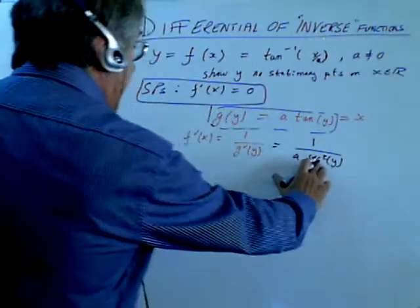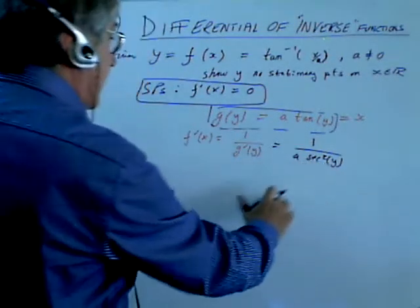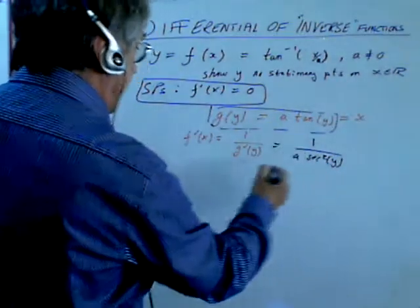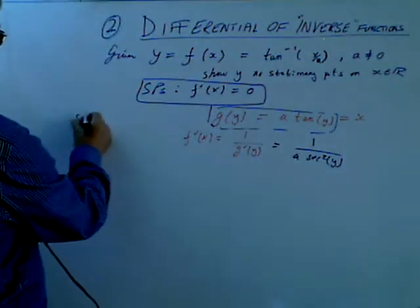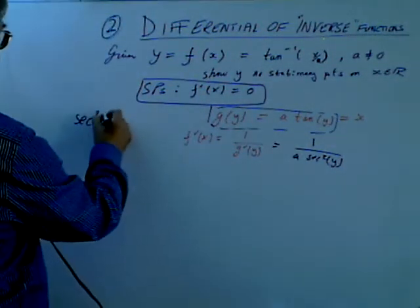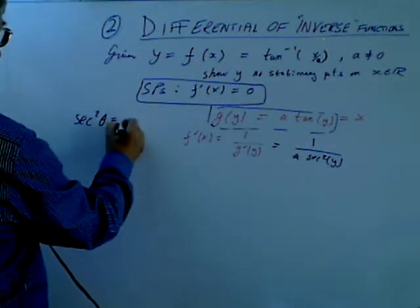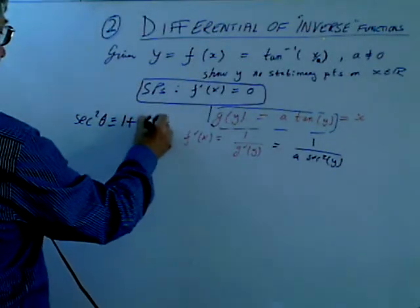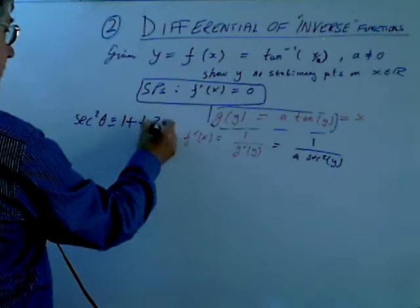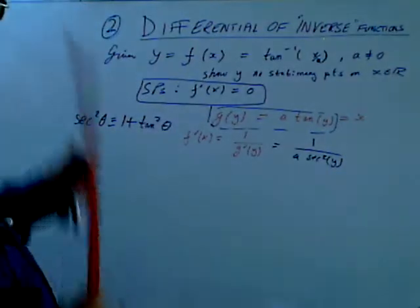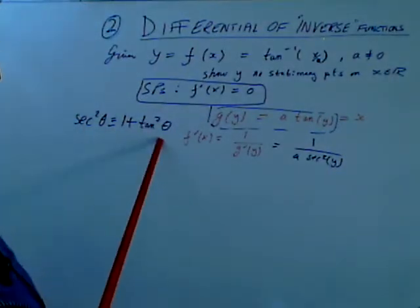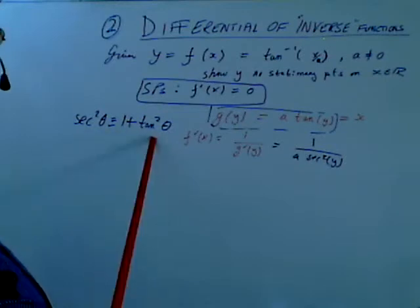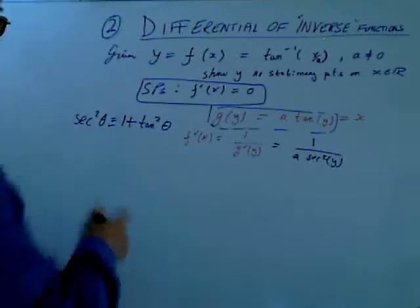However, sec squared is actually a trig identity, because sec²(θ) is identical to 1 + tan²(θ). So that's a trig identity that you should be maybe aware of. If you do forget it...